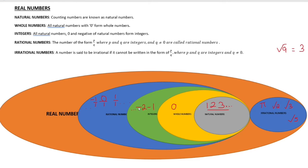The denominator cannot be zero — q is not equal to zero. A minus number like minus 1 over 1 is a rational number. Zero is also rational: 0 over 1. And a natural number like 1 over 1 is also a rational number, where numerator and denominator are integers.